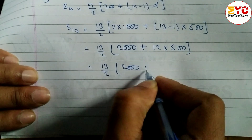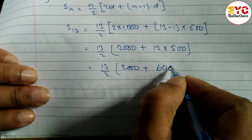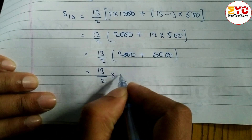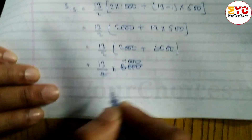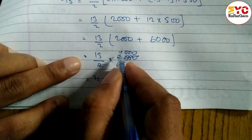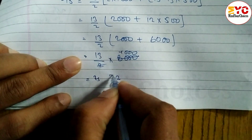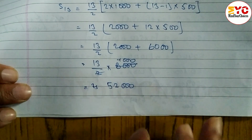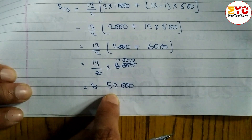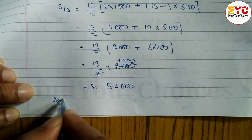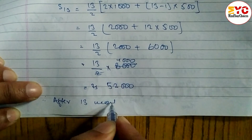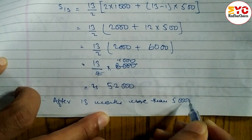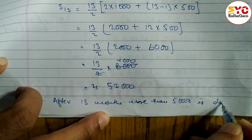S13 equals 13 by 2 times (2000 plus 6000) equals 13 by 2 times 8000 equals 13 into 4000 equals 52,000. Since 52,000 is greater than 50,000, after 13 months more than rupees 50,000 is deposited.